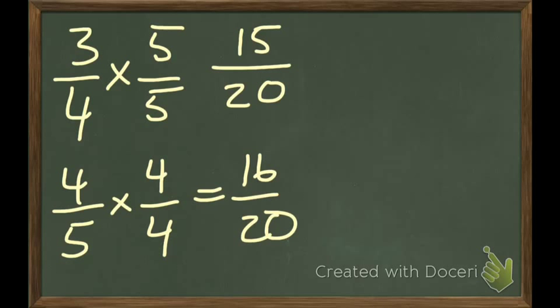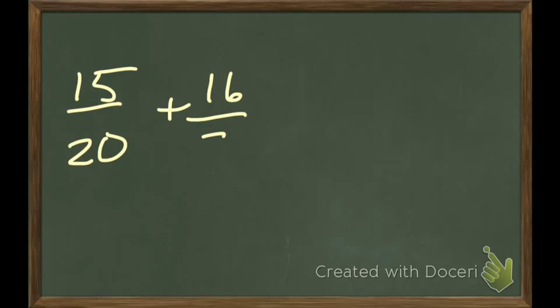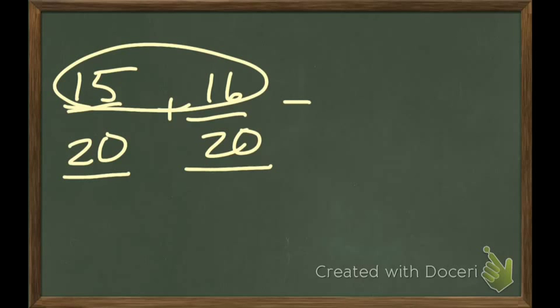So now when I add these up together, it's like crazy easy. All I'm going to do is take 15 20ths plus 16 20ths. Since you now have the same denominator, I simply add 15 and 16. And 15 and 16, of course, is 31. So it's 31 20ths.